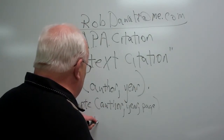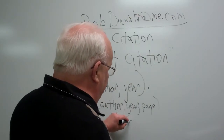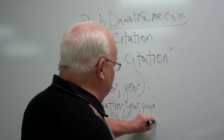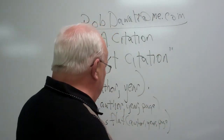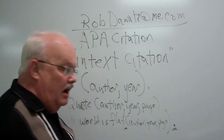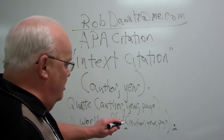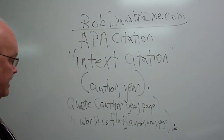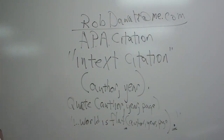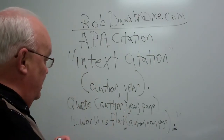So you would put in quote marks 'the world is flat,' and then at the end — this is something where I've made mistakes over the years — you put author, year, page, close parentheses, and period. The period goes after the closing parenthesis, not inside the quote. And there's no comma in the parenthetical. So you put your quote marks out here, something like 'the world is flat...' with three dots if it's not a complete sentence.